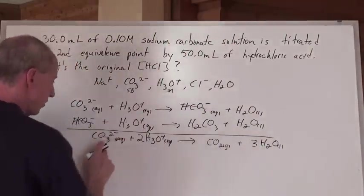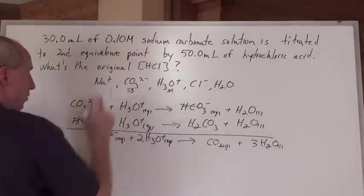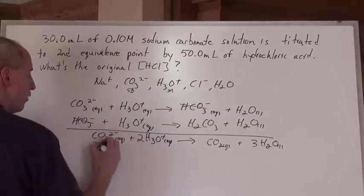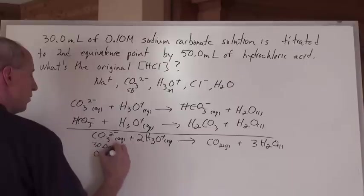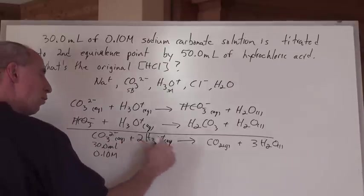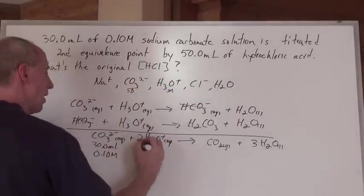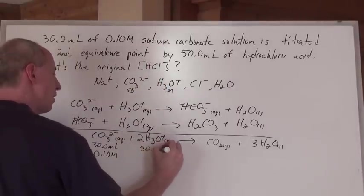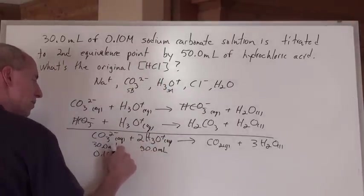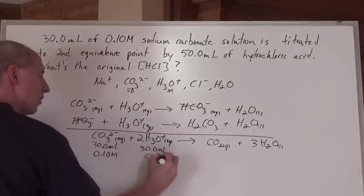30 mils of 0.1 of this, because this sodium carbonate is represented by this. There's the 30.0 milliliters of the 0.10 mole per liter of that. And what do we know about this? The hydrochloric acid, we needed 50 milliliters of this to react with 30 mils of this. We need to find the concentration of that.